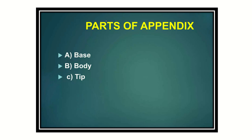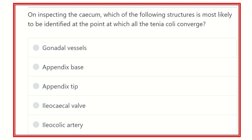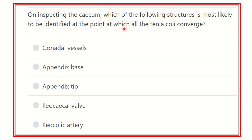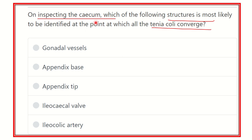Welcome to another question and answer session. Question one: inspecting the cecum — which of the following structures is most likely to be identified at the point at which all the taenia coli converge? The options are: gonadal vessels, appendix base, appendix tip, ileocecal valve, and ileocolic artery.